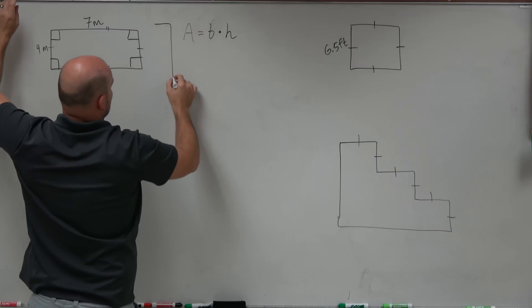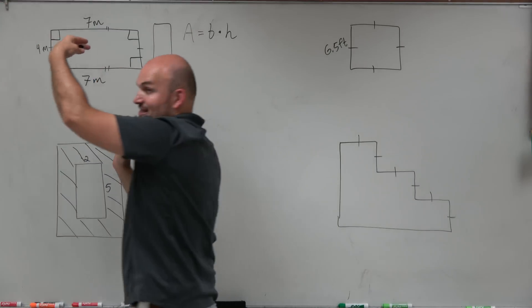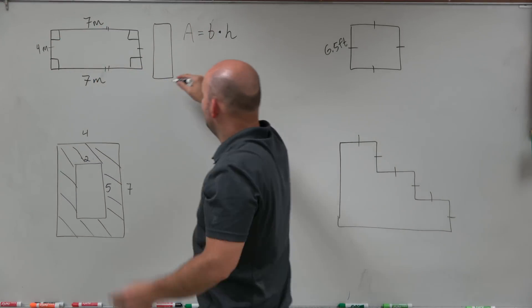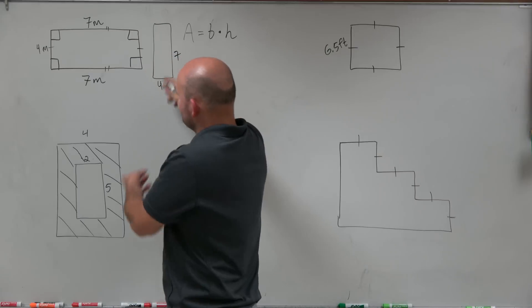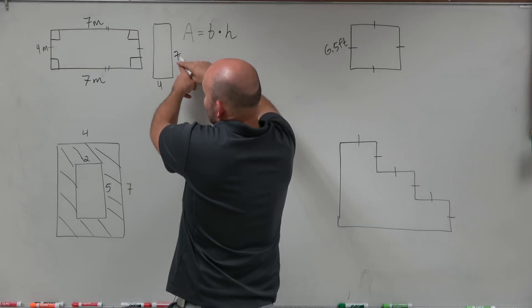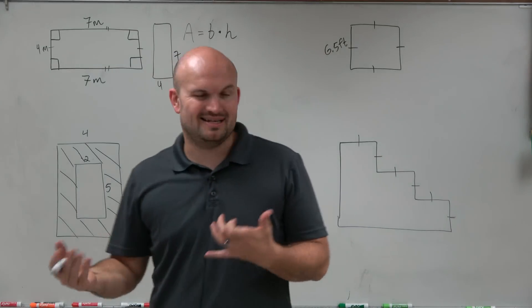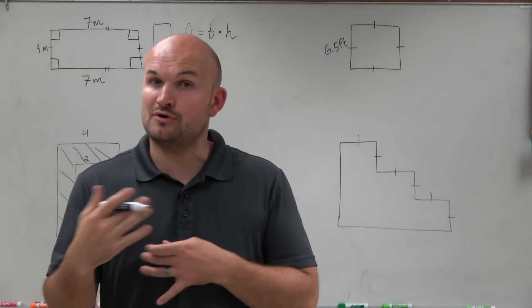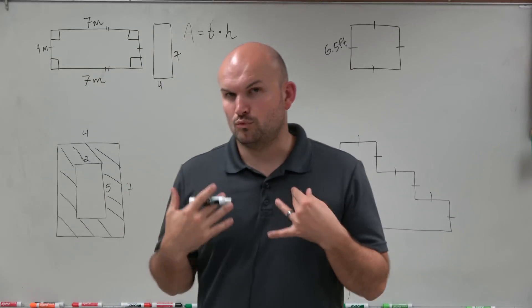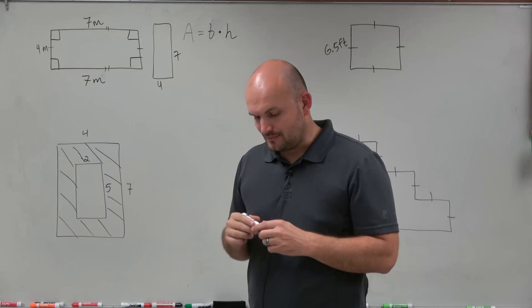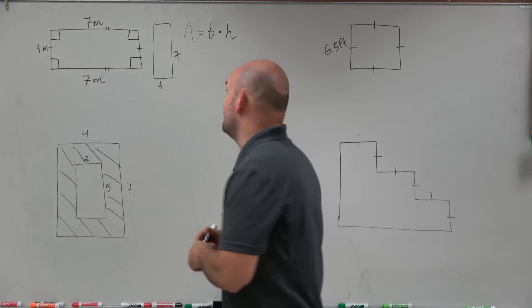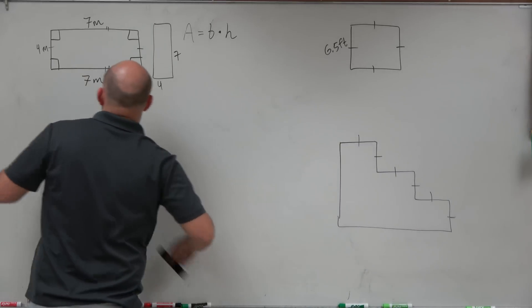Now the other thing to realize is I could also orientate this - I could flip it over to its side and say here's 4 and here's 7, that's my base and that's my height. Because if you notice the formula base times height, it doesn't really matter if it's 4 times 7 or 7 times 4. We're still going to have the same area. So in this example let's just leave it as that.